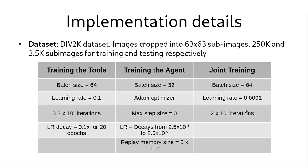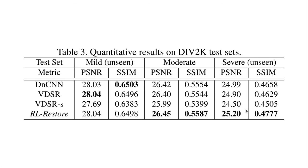Now, let's get into some implementation details. The dataset that has been used for experimenting with this is the DIV2K dataset. The images have been cropped into sub-images so that we obtain a total of 250K training images and 3.5K testing images. Given below are the hyperparameters for training the tools, training the agent and the final fine-tuning algorithm.